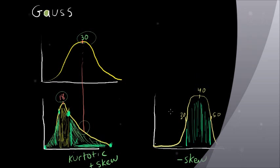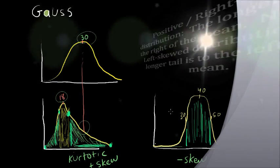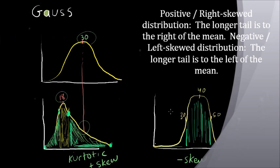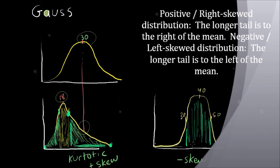Now, skew shows the lopsidedness of the curve, whether it's to the left or the right. And the one that is lopsided to the left is actually called positive skew. And the one that is lopsided to the right is negative skew.